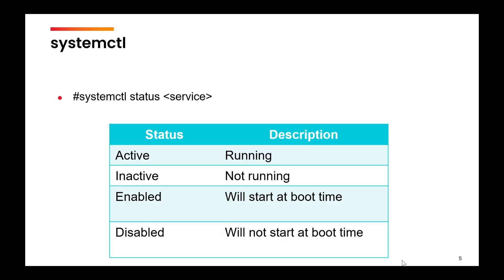Whenever you want to check the status of a unit or a service — whether it is running or not, whether it is installed or not — we will use the systemctl command. The basic command is: systemctl status, followed by the name of the service. We will get four key types of output: whether the service is running, stopped, enabled, or disabled.